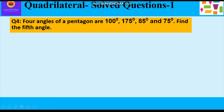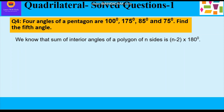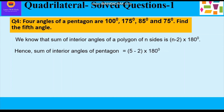Question number 4: four angles of a pentagon are 100°, 175°, 85°, and 75°. Find the fifth angle. Since it's not a regular pentagon, we first find the sum of interior angles using the formula: (5 − 2) × 180° = 3 × 180° = 540°. Let the fifth angle be x.